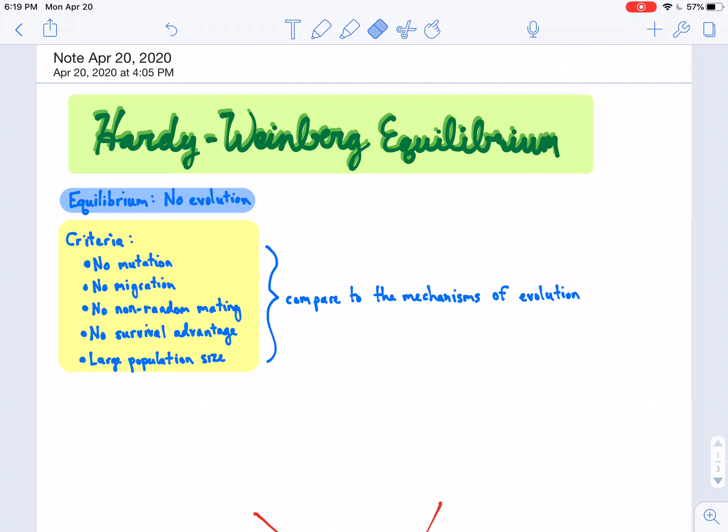So for that reason, the Hardy-Weinberg equilibrium principle exists in order for us to calculate allele frequencies before and after a certain amount of time. Now, in order for a population to be in equilibrium, that means it is not evolving. So for no evolution to occur, that means it cannot be subject to any of those mechanisms of evolution that we discussed before.